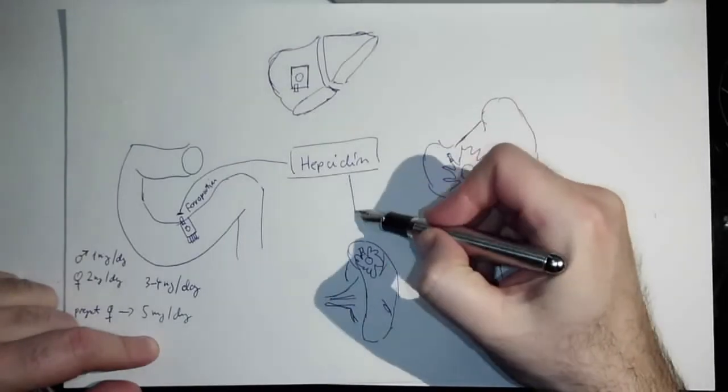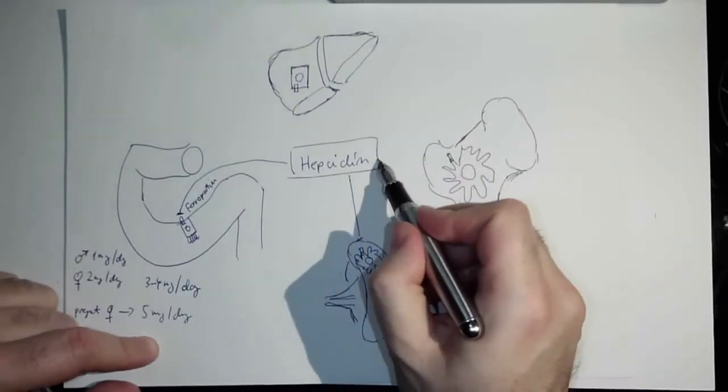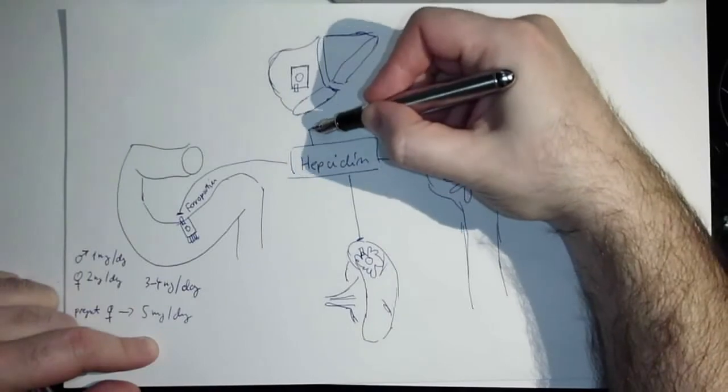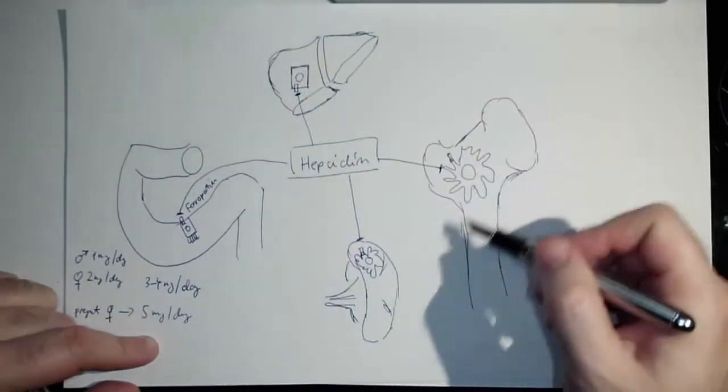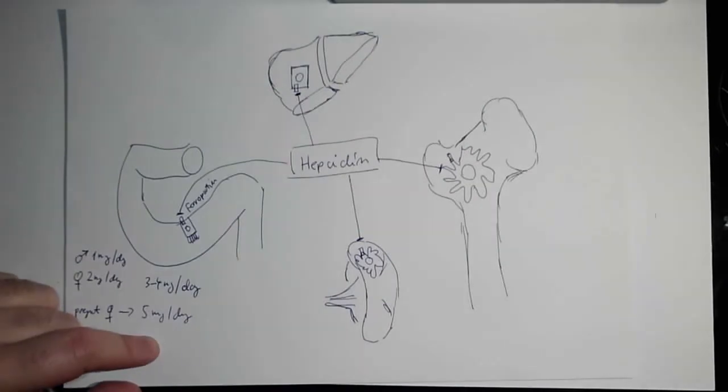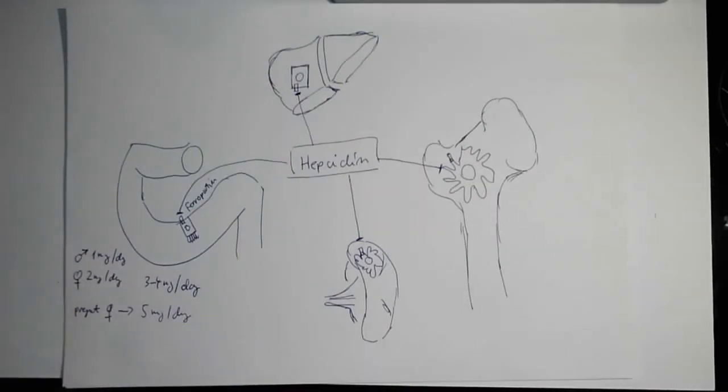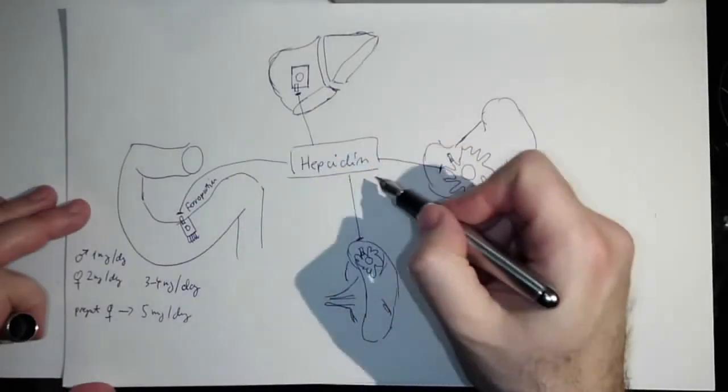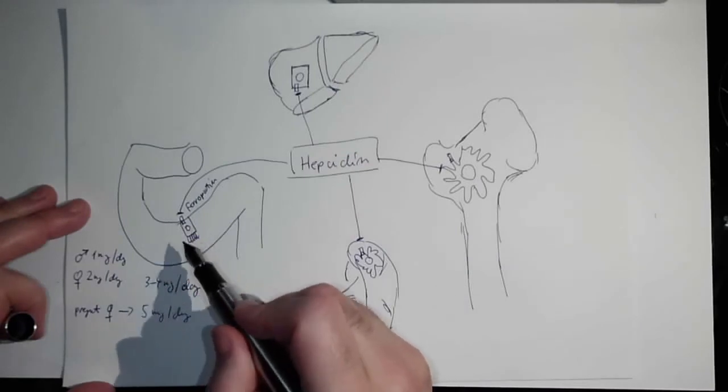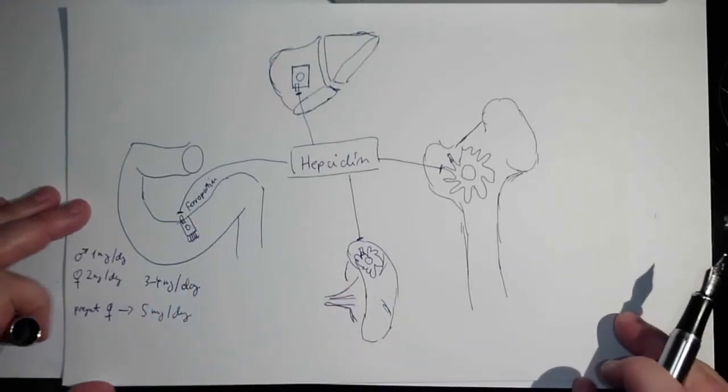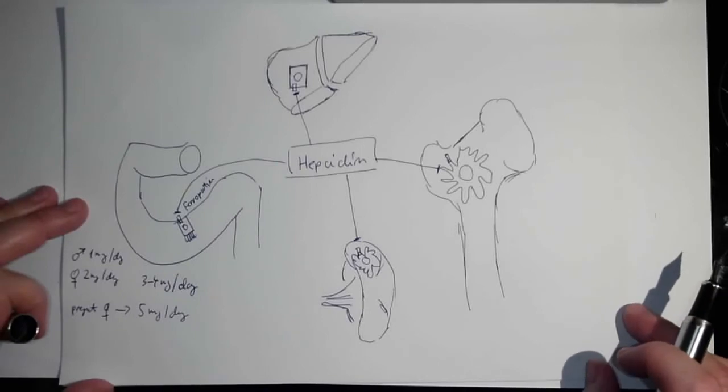This hepcidin is able to block it. So basically if we're having high levels of hepcidin, the iron won't be absorbed or released from these cells. There is a special mutation or genetic disease disorder called primary hemochromatosis. There are many types and mainly there's a genetic problem in releasing of this molecule, and this molecule is low in the blood. That's why the person increasingly absorbs iron, which is deadly especially for liver and heart.